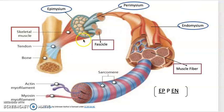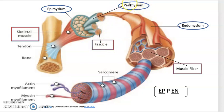Each muscle is surrounded by a connective tissue sheet called the epimysium. Inside each skeletal muscle, we have bundles of muscle fibers organized into individual bundles called fascicles. Fascicles are surrounded by a connective tissue called the perimysium. Each fascicle contains a bundle of muscle fibers, and every individual muscle fiber is again covered with connective tissue called the endomysium.